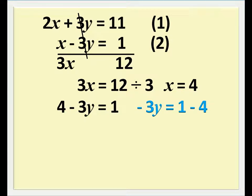Putting them into like terms, we have negative 3y equals 1 minus 4. So we have negative 3y equals negative 3.